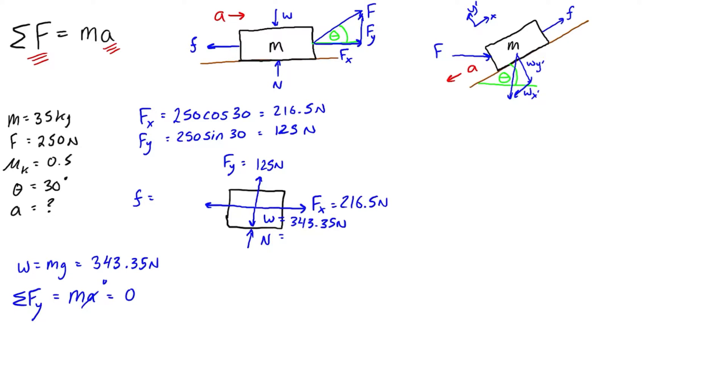So the sum of forces, we have 125 going up plus the normal force minus w, which is going down, just 343.35. So we can just rearrange that, and we'll get n is equal to 218.35 newtons.